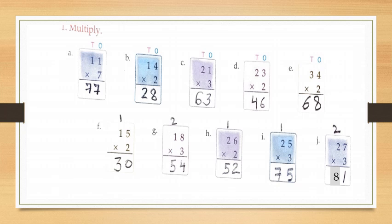Now H part: twenty six multiply by two. First multiply the ones by two — that is six into two is twelve. So write two under ones and carry one ten. Now multiply the tens by two — that is two into two is four. Add one carry, so four plus one is five. Write five under tens. Your answer will be fifty two.